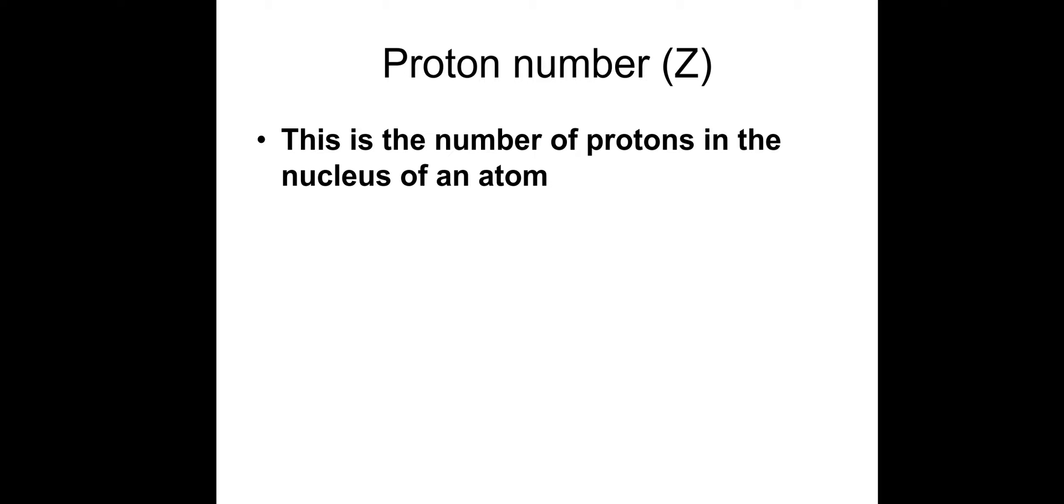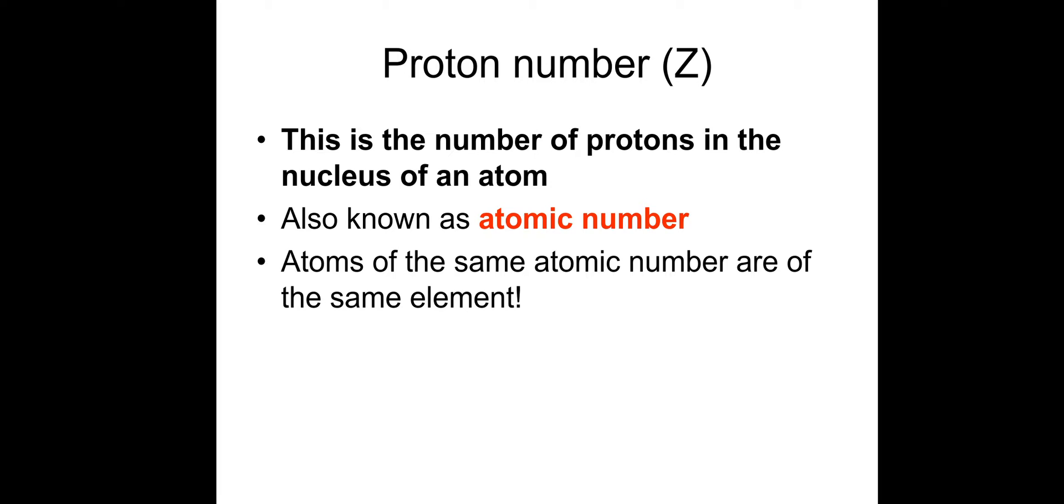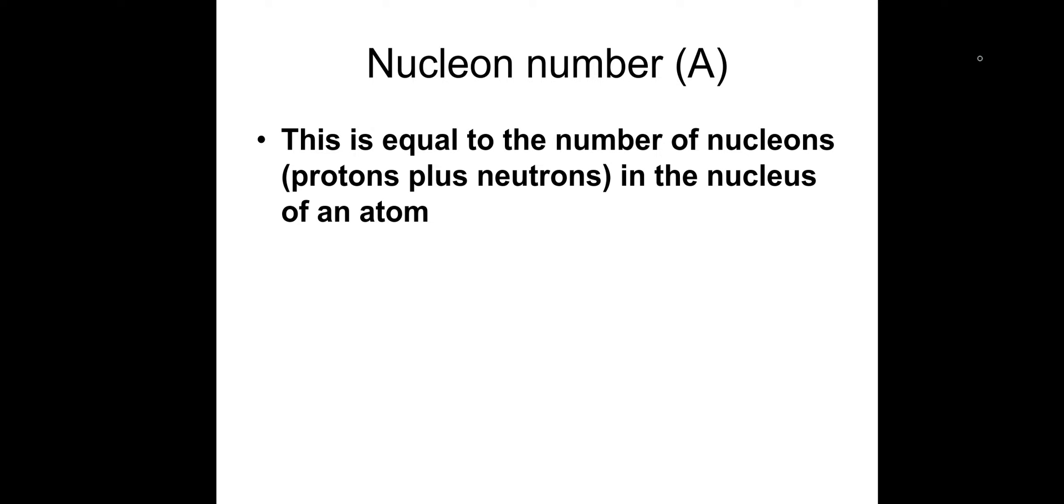Proton number Z. Proton number is the number of protons in the nucleus of an atom. Also known as the atomic number. So if you hear the atomic number, it's just the number of protons. And atoms of the same atomic number are of the same element. I'll touch on this later when I talk about isotopes. Nucleon number A. This is equal to the number of nucleons, and a nucleon is protons and neutrons in the nucleus of an atom. Another name, it's also known as mass number. Remember to pause if you need to, or just rewind.